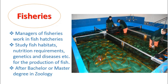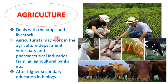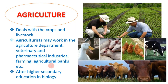MBBS is good for nutrition and disease management. Agriculture involves the study of crops and livestock — cows, chickens, and other animals. You can work in the agriculture department, veterinary hospitals, and pharmaceutical industries. After FSC you can also pursue studies in agriculture-related areas including farming and banking sectors.